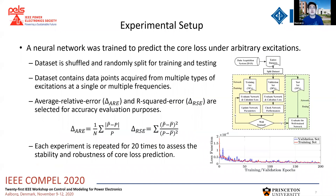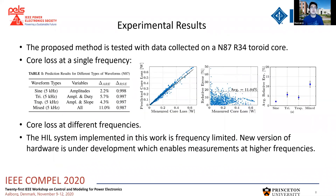To evaluate the effectiveness of this approach, a series of experiments were carried out. Details about the experiment setups can be found in the paper. Briefly, we tested the performance of the approach in multiple scenarios, such as under single or multiple types of waveforms and with single or different frequencies. We also carried out repeating experiments to assess the stability. Here, for example, we showed the prediction results on the single frequency case, where the network is trained to predict core loss under single frequency with single or mixed types of waveforms. Low relative errors are achieved in all tested cases. The right-hand side figures show the distribution and variance of error, where a low error rate with relatively small fluctuations can be observed, but it also shows there is still a large space for further improvement.